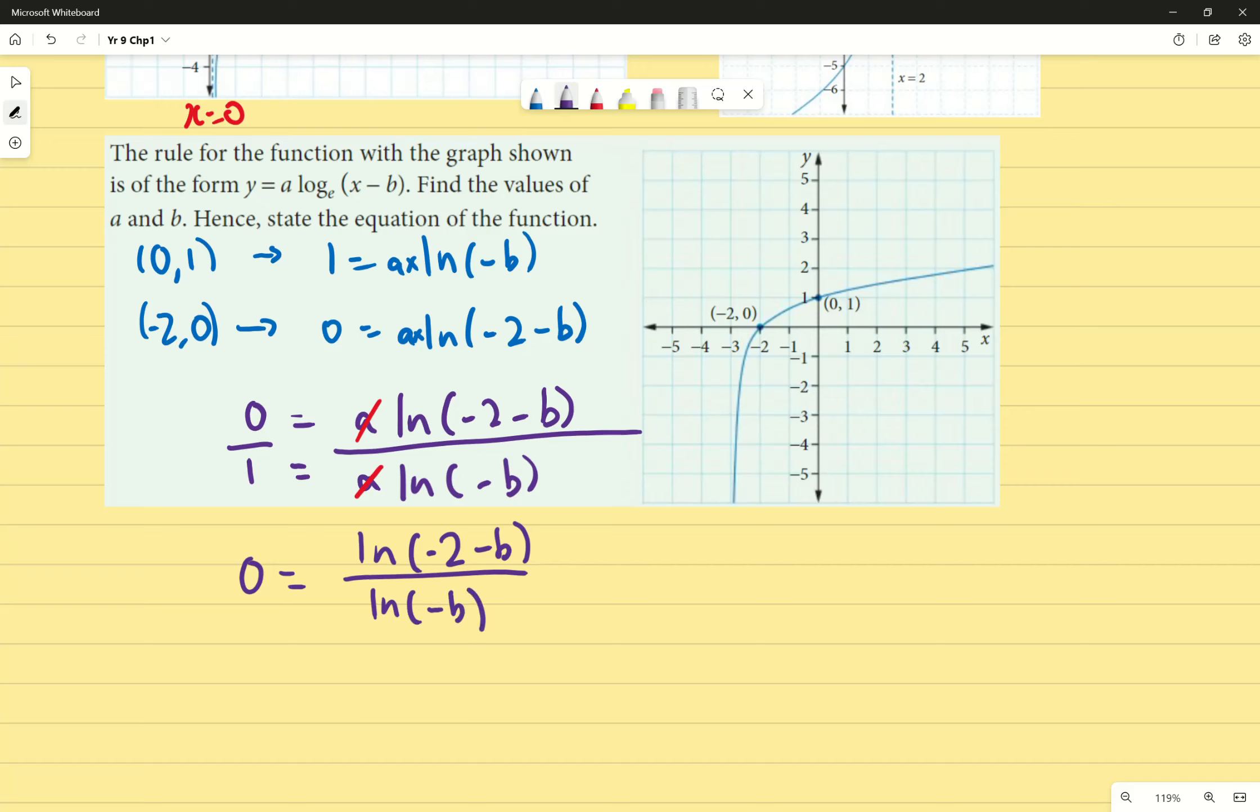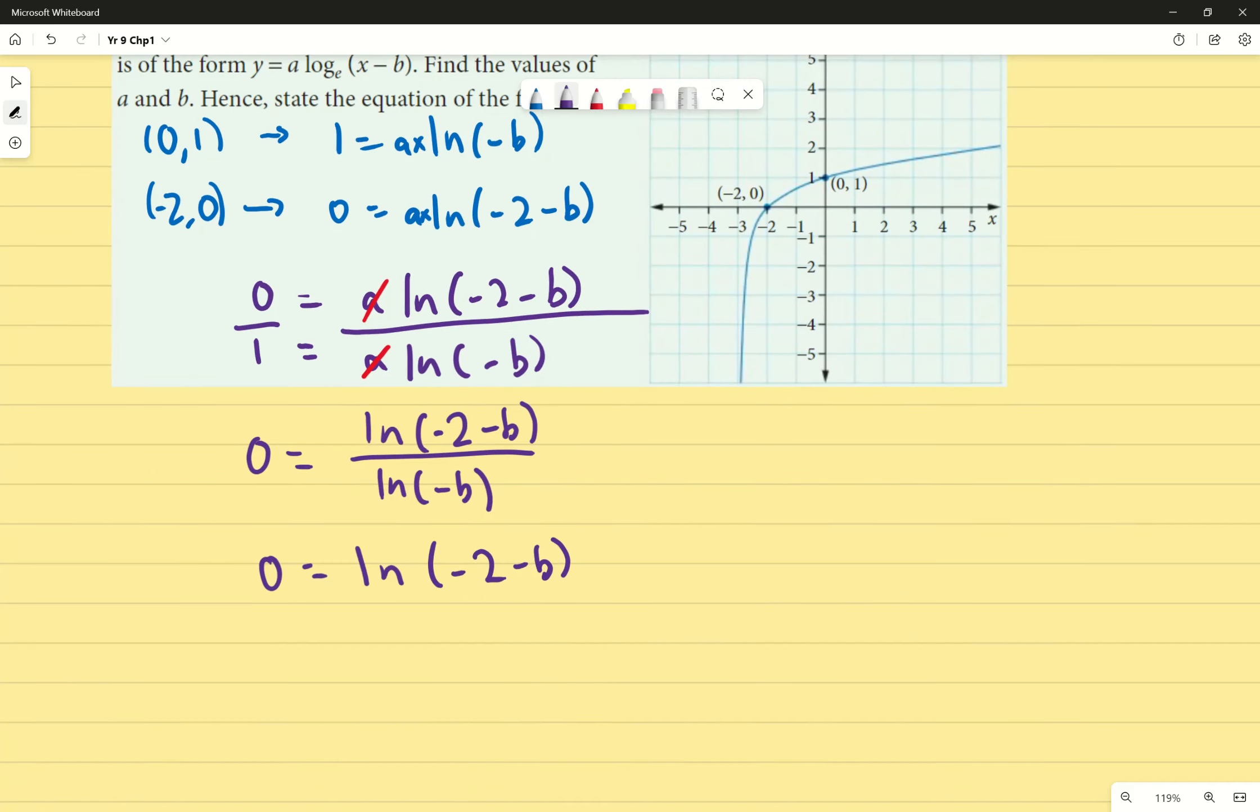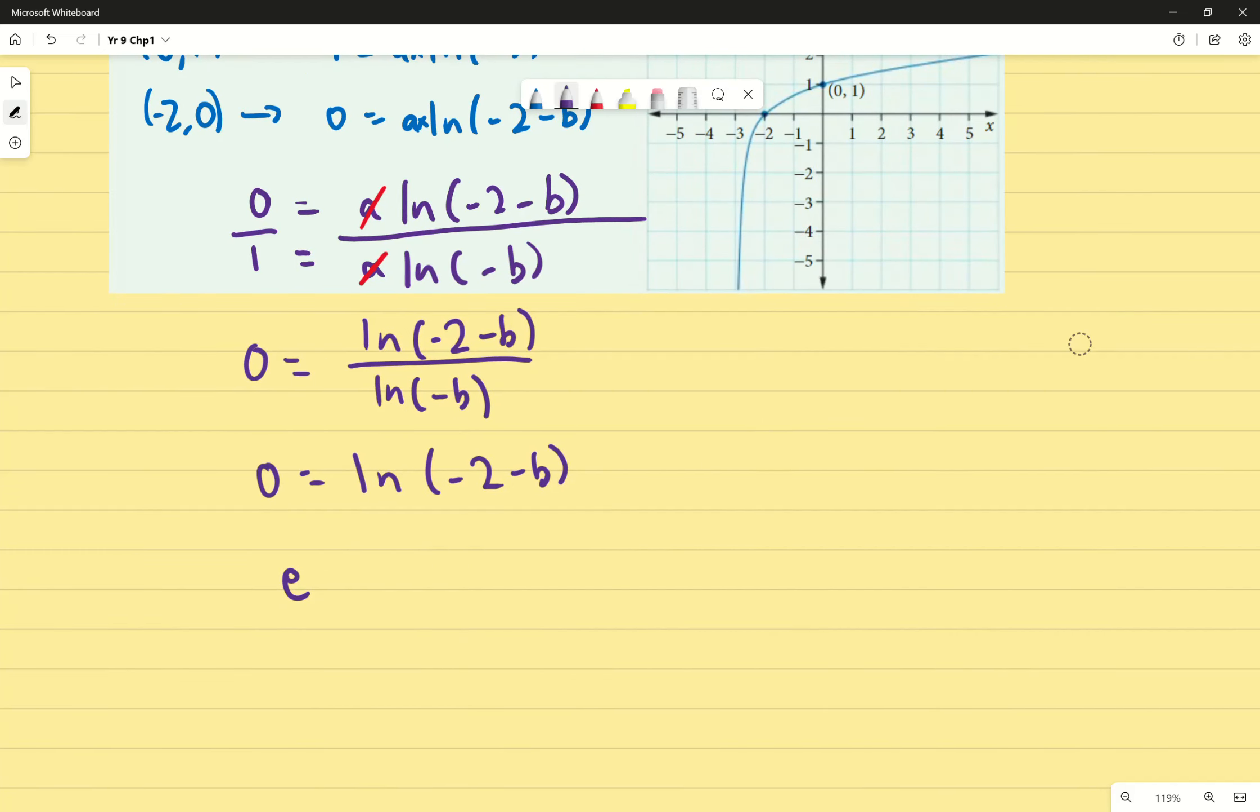Because I'm just simplifying, I know that negative 2 minus b, I can multiply both sides by log base e of negative b, which then becomes 0 equals log base e of negative 2 minus b. Of course, e to the power of... sorry, my apologies, let me rearrange that. It's e to the power of 0 equals negative 2 minus b. Once I've done that, because I know that e to the power of 0 is just 1, I have negative 2 minus b equals 1, b equals negative 3.